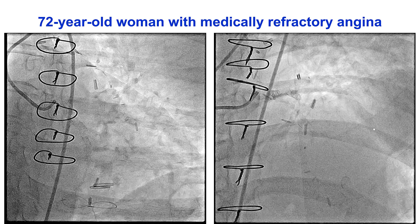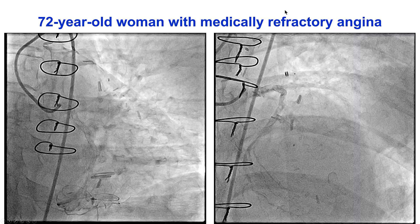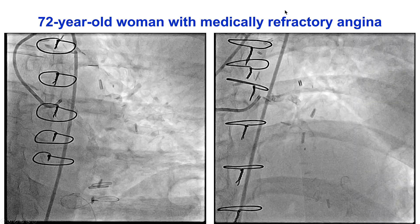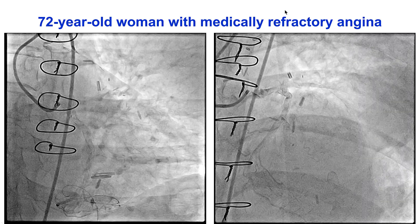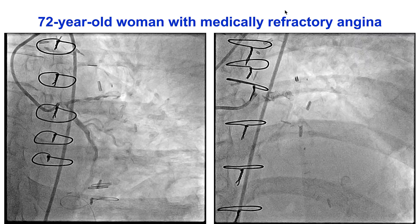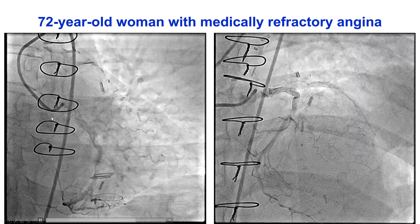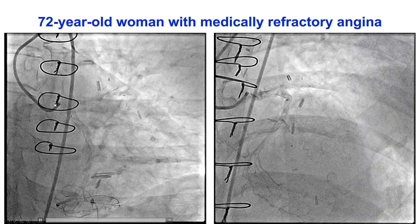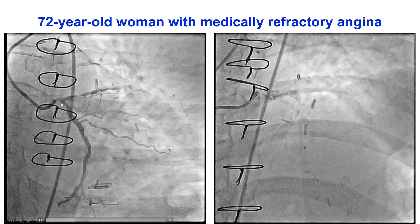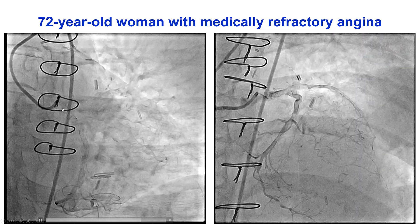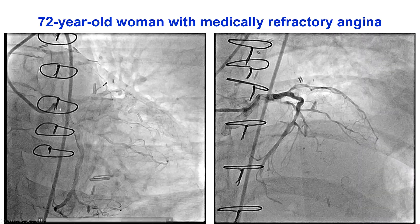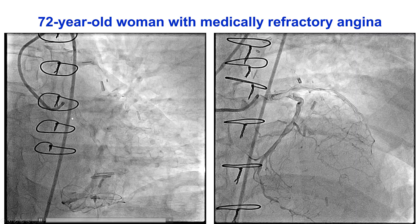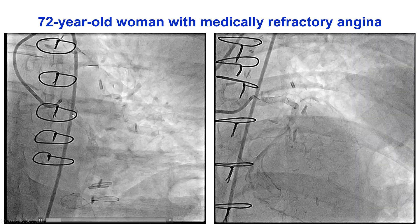The patient was an elderly woman who presented with medically refractory angina. She had previous coronary bypass graft surgery and had also undergone PCI of the left main and the proximal circumflex with a stent that was underexpanded and could not be expanded at the time of the procedure.